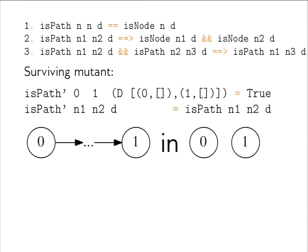We should kill this mutant with a property that doesn't allow this — otherwise our specification is weak. An audience member asks whether property 2 is a valid specification. It is: if there is a path, those two nodes exist — it tests something about `isPath`. So let's add a property to kill the mutant.